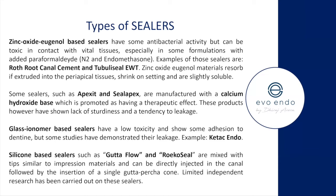Silicon-based sealers such as GuttaFlow and RoekoSeal, and bioceramic sealers, may be the way of the future. You can inject bioceramic sealers into the root canal system and use a GP cone to spread the sealer into canal irregularities, allowing it to flow and seal everything off. The benefit of bioceramic sealers is they are very biocompatible — even if there's some extrusion, chances are if you thoroughly cleaned and disinfected the root canal system, things will heal up nicely.